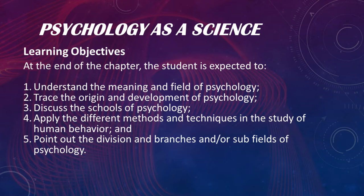Psychology is a young science. Here are the learning objectives for this chapter. At the end of this chapter, the student is expected to: number one, understand the meaning and the field of psychology; two, trace the origin and development of psychology; three, discuss the schools of psychology; four, apply the different methods and techniques in the study of human behavior; and five, point out the divisions, branches, and sub-fields of psychology.